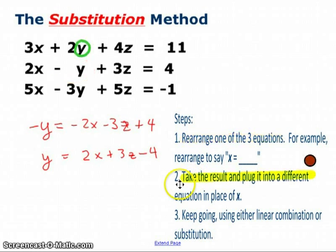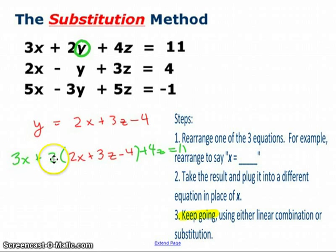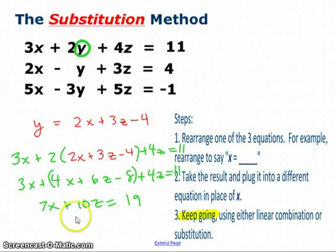Now I move on to step two. I take that result and I plug it into a different equation. So again, I'm going to tell you where I want you to plug it in. Take the expression 2x plus 3z minus 4 and plug it in for that y value there. Hit the pause button. When you come back, I'll show you what I got. Okay, I rewrote it this way. 3x plus 2 times that expression plus 4z equals 11. Now, I ought to be able to and you ought to be able to simplify this down and get an equation that just talks about x and z. And as I do so, I get it down to 7x plus 10z equals 19.